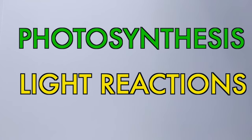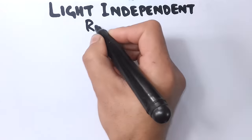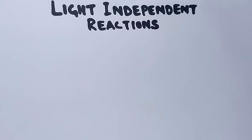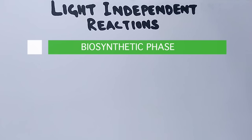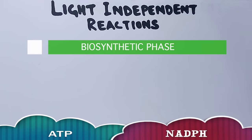In this series of videos we have been discussing photosynthesis and its light reactions. Now we are here to discuss the light-independent reactions of photosynthesis. The light-independent phase is the biosynthetic phase of photosynthesis — something is getting synthesized here. These light-independent reactions need energy and a reducing agent, which we get from light reactions: ATP for energy and NADPH as the reducing agent.